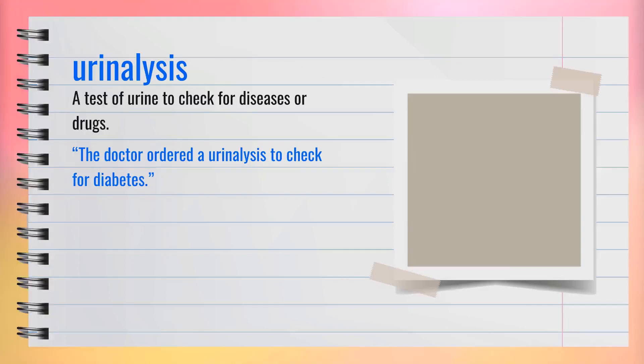The word urinalysis, spelled U-R-I-N-A-L-Y-S-I-S, is a noun. It means a test of urine to check for diseases or drugs. For example, the doctor ordered a urinalysis to check for diabetes. This is a common test in medical settings. In summary, a urinalysis is a medical test that examines urine for various conditions.